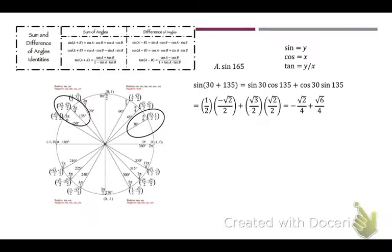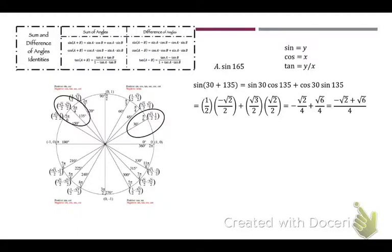Multiplying that out: the first term gives negative √2 over 4, and then √3/2 times √2/2 gives √6 over 4. We have a common denominator, so we add across the top: that's negative √2 plus √6 divided by 4. And that cannot simplify any further — you're done.